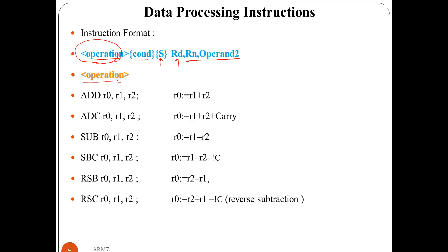We have different arithmetic operations. ADD stands for addition: the instruction 'ADD R0, R1, R2' is executed as R0 = R1 + R2, so R1 and R2 are added and the result is stored in R0. ADC is add with carry: in some cases during addition a carry is generated and if the user wants to include this carry in the result, ADC is used — the two numbers plus the carry are added and the result is stored in R0.